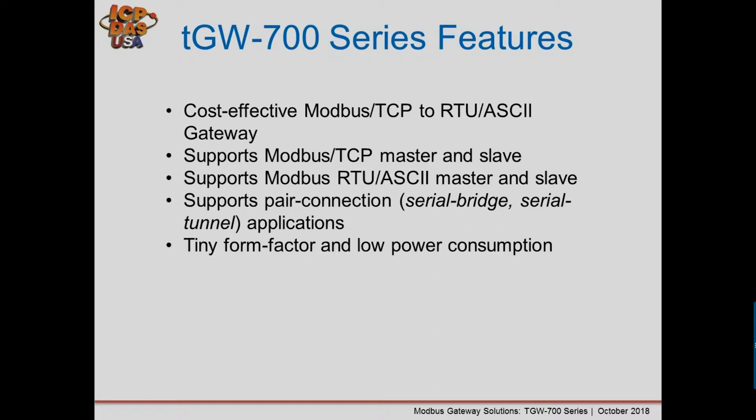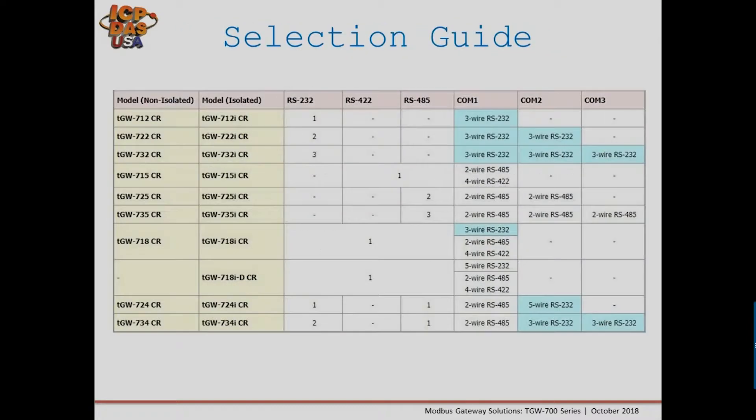The TGW series bridges the gap between these two communication types. It is a cost-effective solution, usually under $200. It supports Modbus TCP and Modbus RTU in both master and slave modes, supports pair connection to create a serial bridge or tunnel, and features a tiny form factor with very low power consumption. It can also be PoE powered.